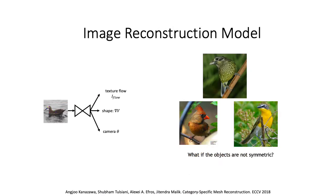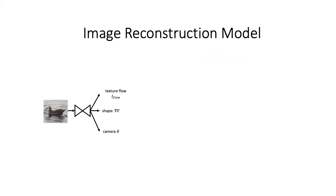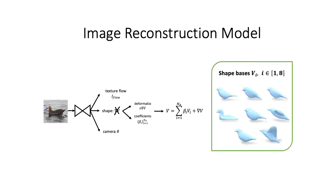Our image reconstruction model builds on recent success of single-view 3D reconstruction, but is specialized to handle asymmetric objects. To do so, instead of predicting the coordinates of the vertices, we decompose the shape into a basis combination and vertex offsets on top of the basis. The basis combination reveals the identity of an instance, while the vertex offsets capture subtle motion such as head rotation.